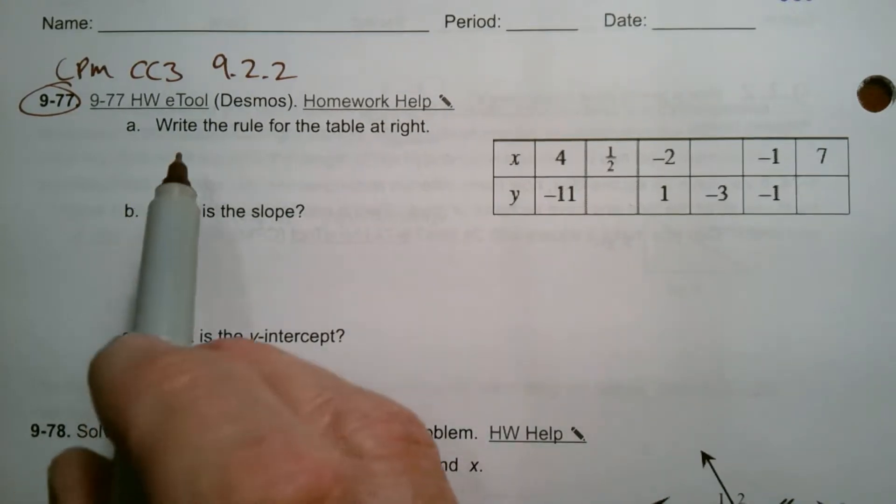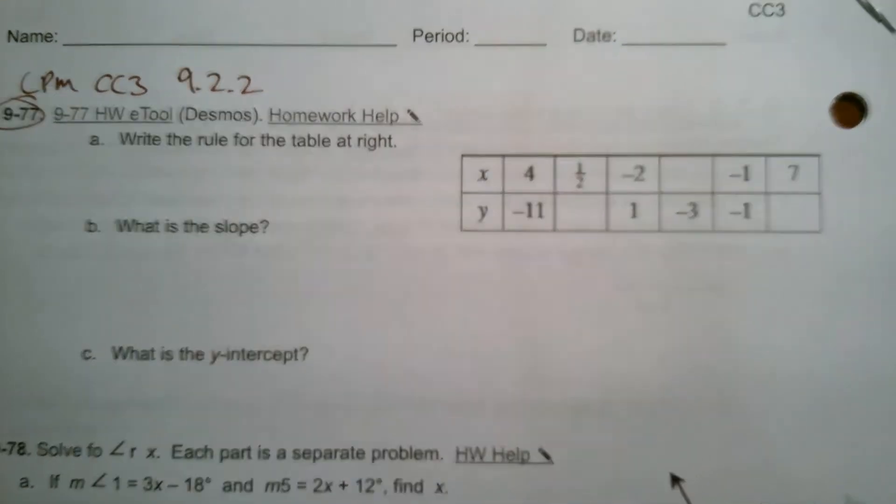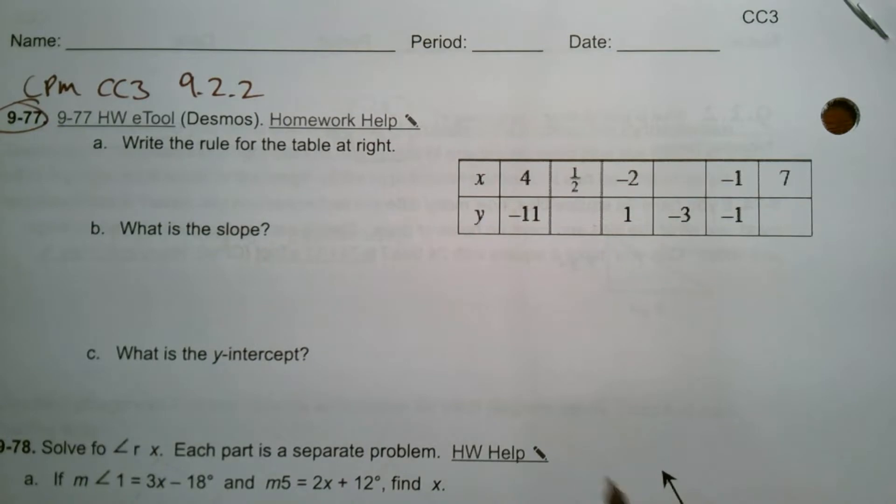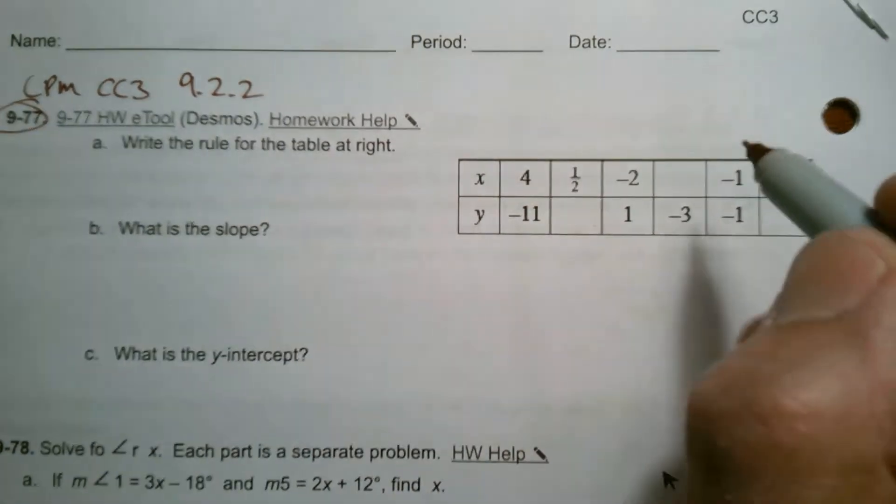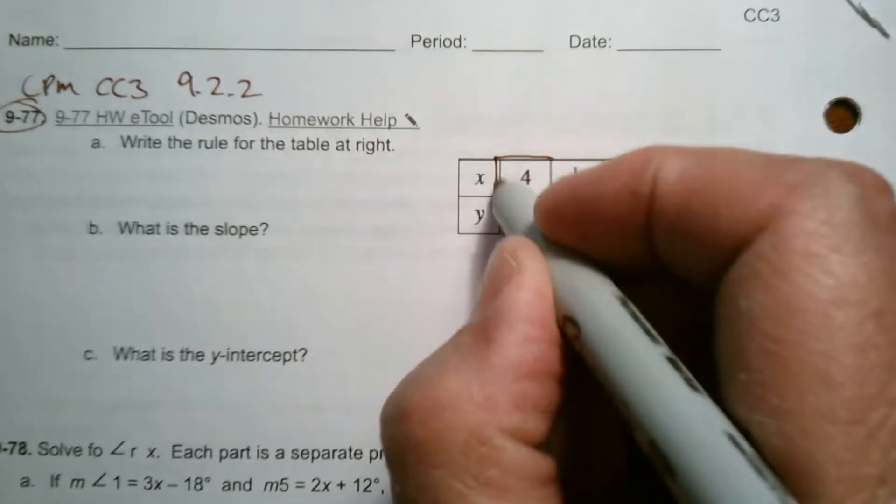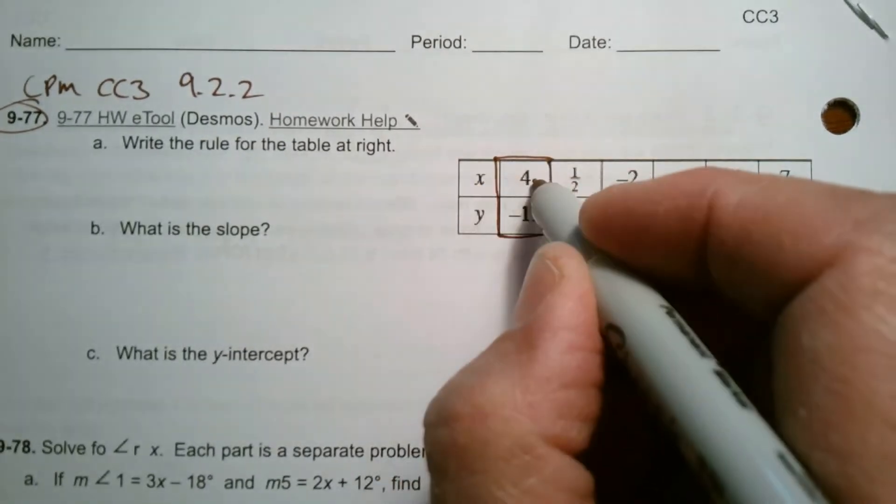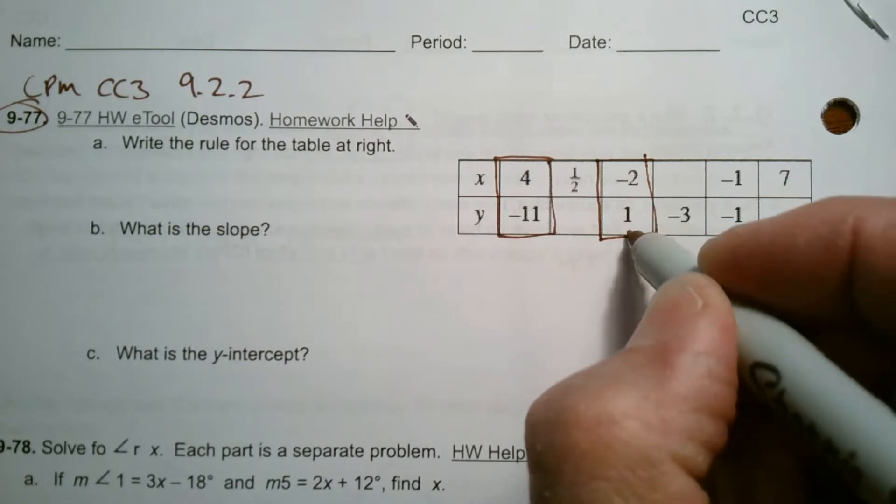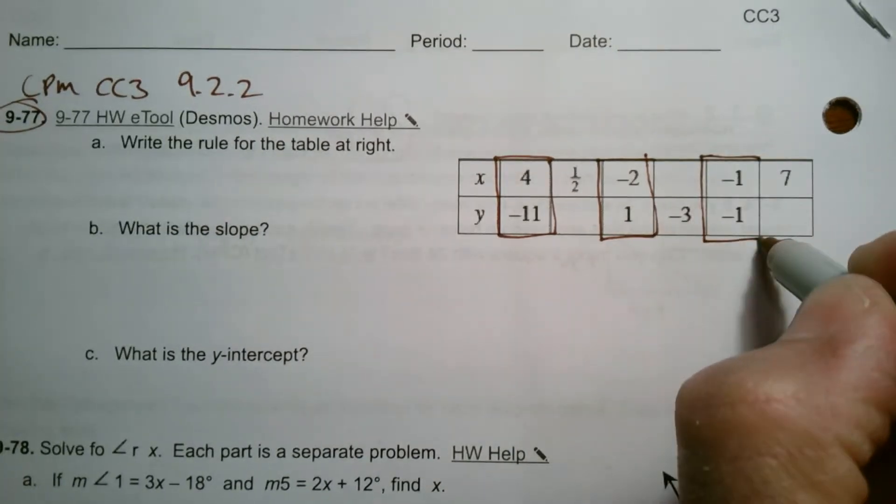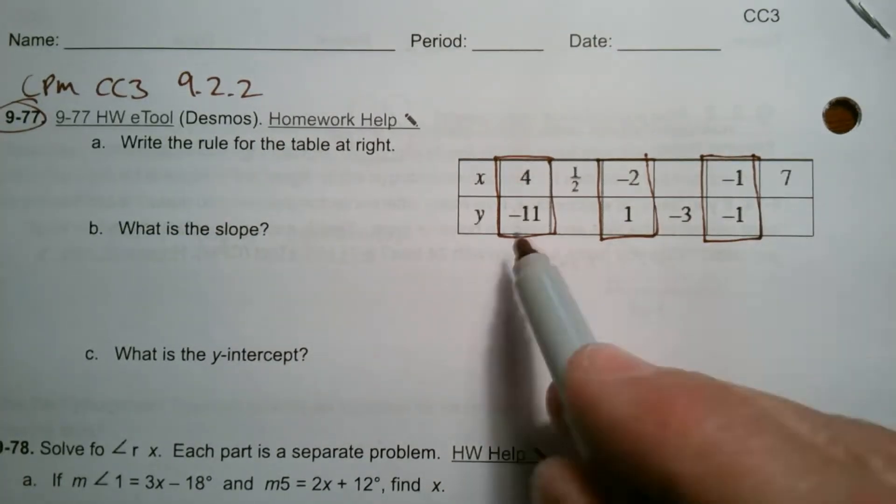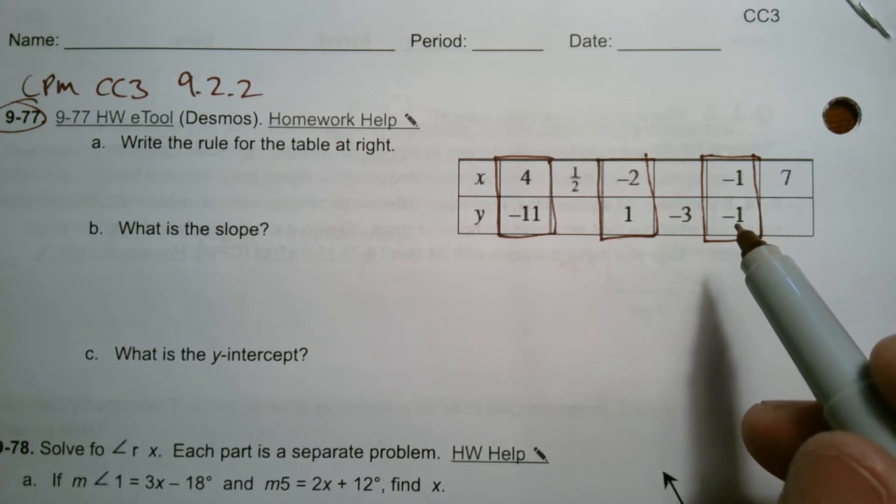So it says, write the rule for the table at right. So here's the process I use. I have a couple points here. I am given this set. When x equals 4, y equals negative 11. This one here, when x equals negative 2, y equals 1. And when x equals negative 1, y equals negative 1. So I can use those to find my rule.